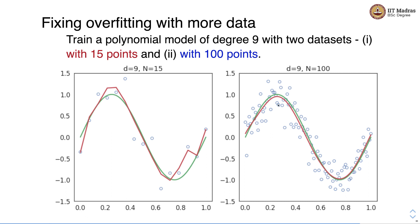Because when we bring in more data, even if the model has got more capacity compared to a lower order polynomial model, it just cannot memorize all the points. Now we have more points and models do not have that much capacity to remember all of them. Hence, getting more data helps us control the overfitting problem.